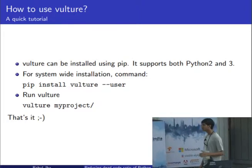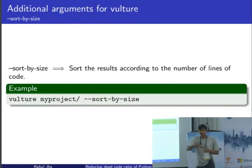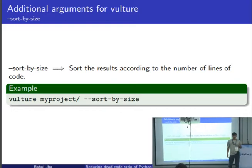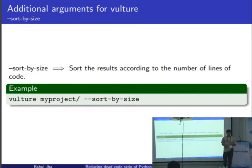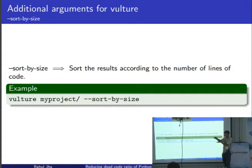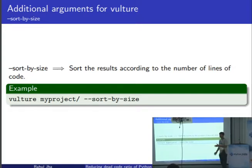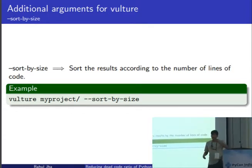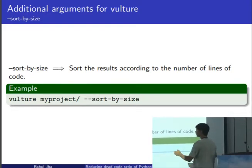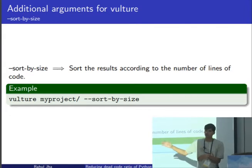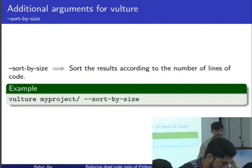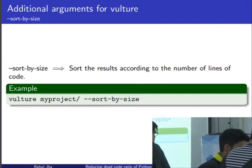Let's discuss some additional arguments that increase Vulture's utility. There is an argument, sort-by-size. We received requests from programmers to sort out priorities. One way to quantize priorities was by the number of lines or the span of the code. If there is a class being rendered as unused spanning over 100 lines, that is your priority — remove it first before a variable spanning one line. So we introduced the sort-by-size feature, which if passed, Vulture will automatically sort results according to the span or size of the dead code.